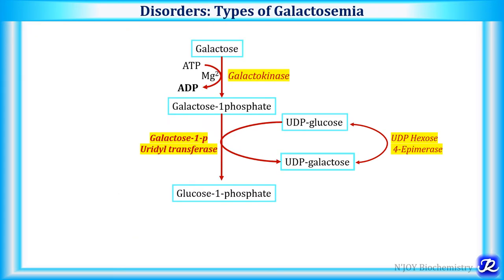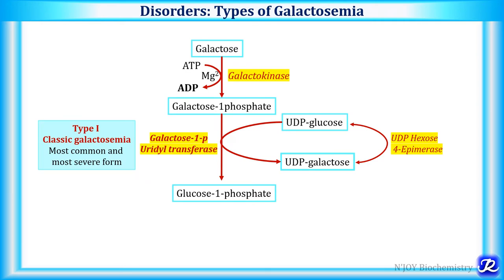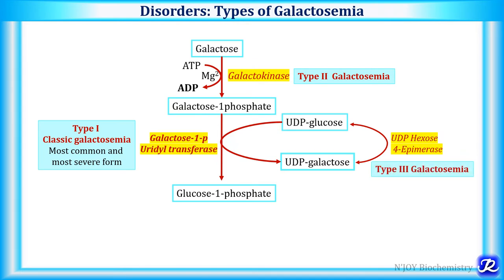There are three types of galactosemia. If the enzyme galactose 1-phosphate uridyl transferase is deficient, it results in type 1 galactosemia, also called classic galactosemia — the most common and most severe form. If galactokinase is deficient, it results in type 2 galactosemia, which is rare and less severe. If UDP hexose 4-epimerase is defective, it results in type 3 galactosemia.